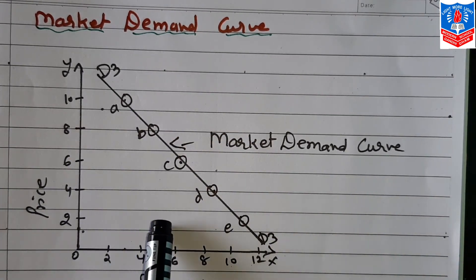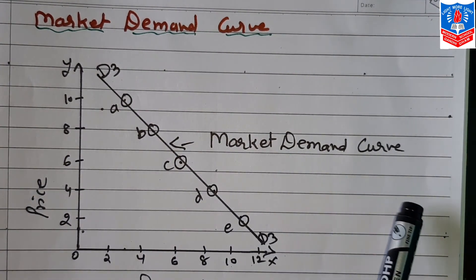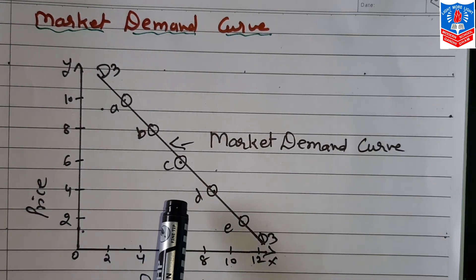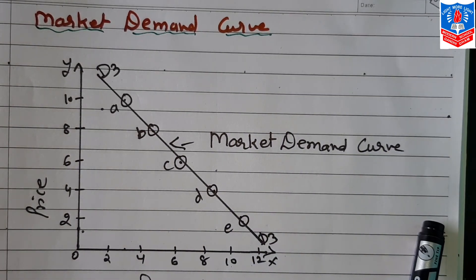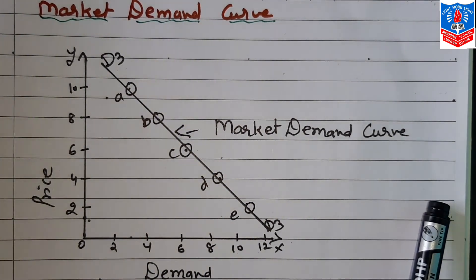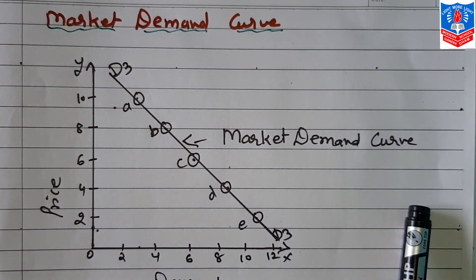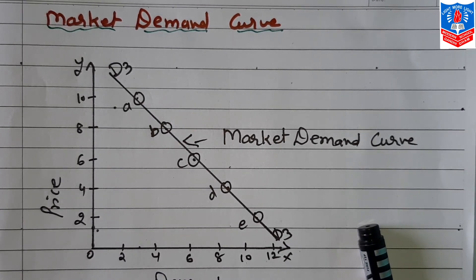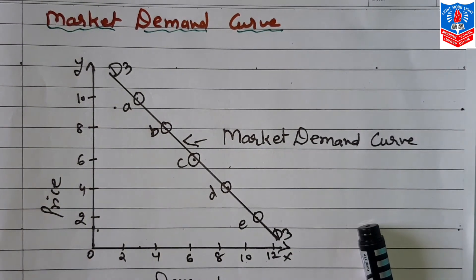The demand curves follow the same downward slope — the individual curves and the market demand curve are structurally similar. From an examination point of view, the individual and market demand curve diagrams are not highly important; what matters are the definitions of individual demand and market demand. This concludes the session and the chapter. See you in the next session with the fourth chapter — supply. Take care, thank you.